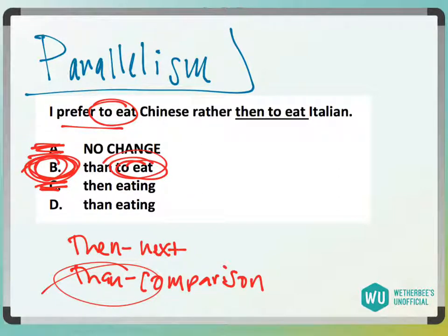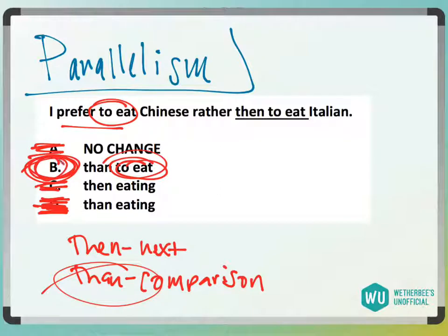Answer choice D: if it said 'I prefer eating Chinese rather than eating Italian,' that would be fine too — but we keep them parallel. So answer choice B.